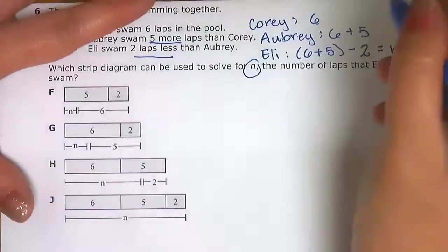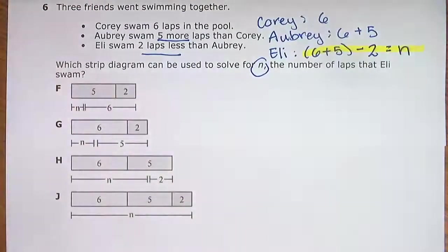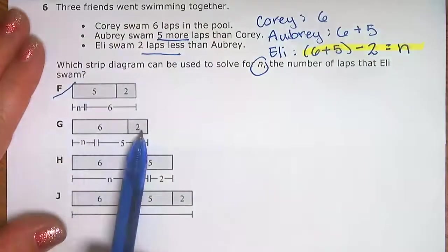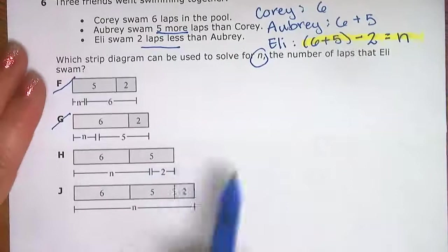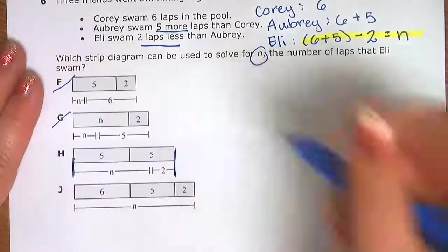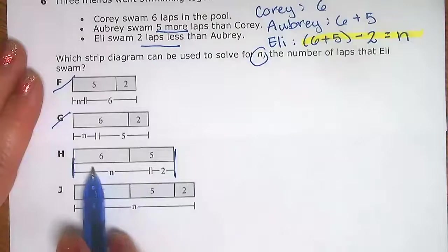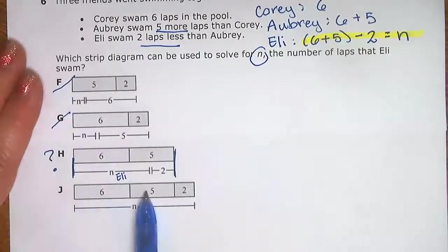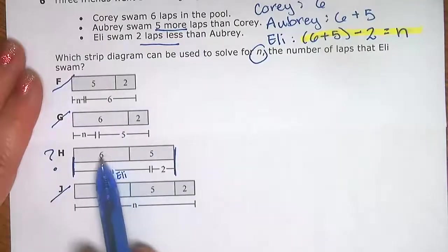So we're looking for the strip diagram that shows six plus five first, then minus two, to give us N. One choice shows five plus two first — that doesn't match. Another shows six plus two — we're looking for six plus five first. The next choice shows six plus five first, then two less than that, so it's matching: 6 + 5 equals a subtotal, back up by two, and we're left with N for Eli. Another choice shows 6 + 5 + 2 equals what Eli has — that doesn't match either. So the best choice is H, because it shows 6 + 5 as the total first.